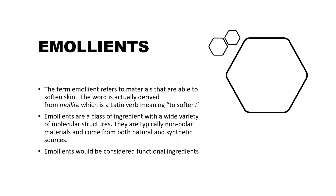So what are emollients? Emollients are basically substances which help to soften the skin. They are derived from the Latin verb 'molleria' which means to soften out. They are incorporated into a wide range of cosmetic products to soften the skin and hair. Emollients are a class of ingredients with a wide variety of molecular structures — they are typically non-polar materials and come from both natural and synthetic sources.